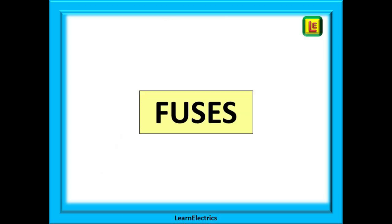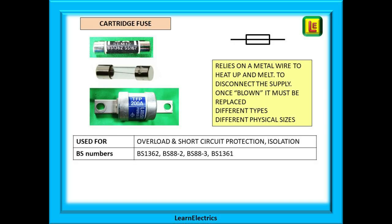Let's start with fuses. We begin with cartridge fuses — they are still very common and used throughout the electrical industry. The symbol most of us use is shown at the top right: an oblong with a line through it to represent the fuse wire. They rely on a piece of metal, the fuse wire, to melt when excessive current flows through the fuse. When the wire melts or blows, this creates a gap and interrupts the flow of current. Once blown, the fuse must be replaced — they are a simple one-shot device.